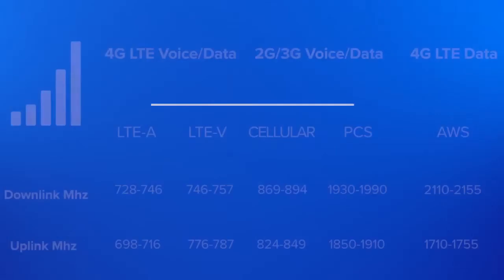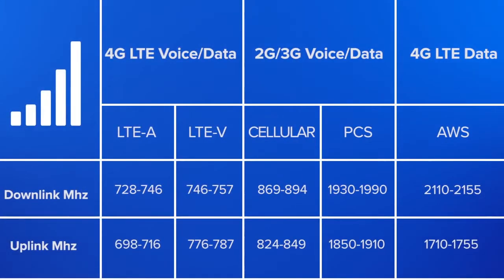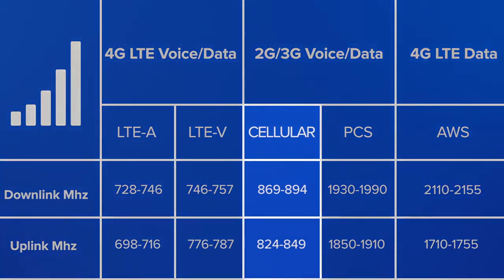Carriers use different bands to transmit different types of signal. If you look at this chart, you can see how it's broken down. Cellular, or 800 MHz, is the most used band for cellular voice and 2G or 3G data, like texts. PCS, or 1900, is also used for this, but to a lesser degree.